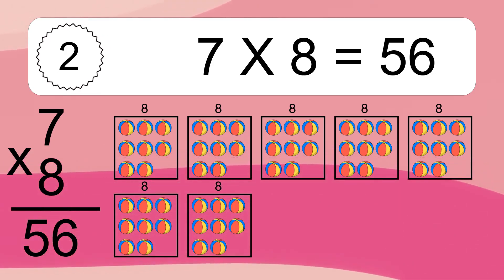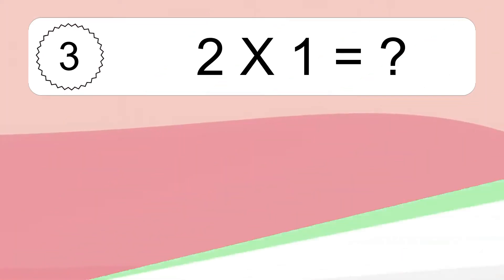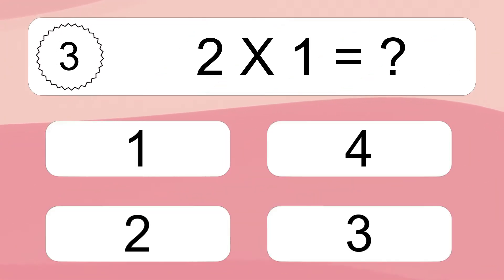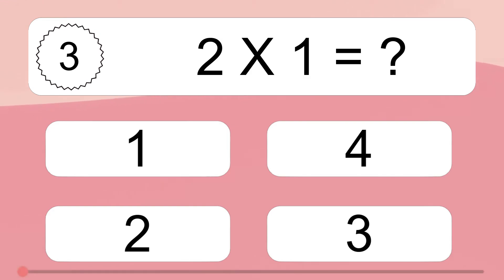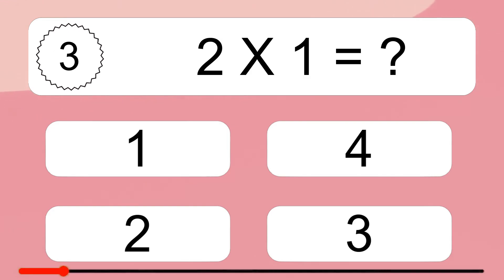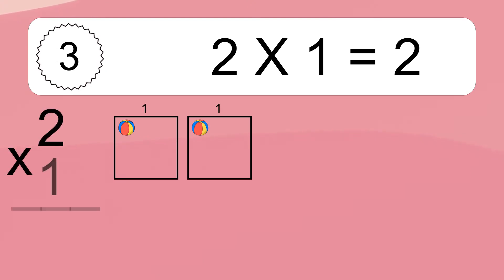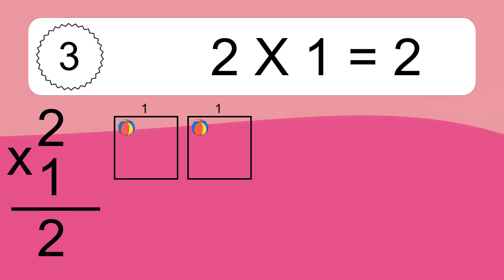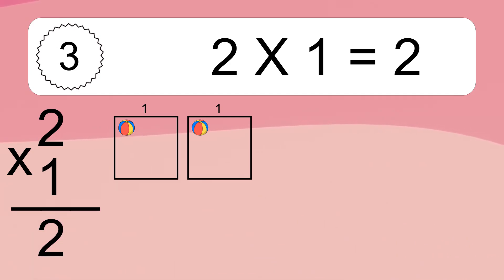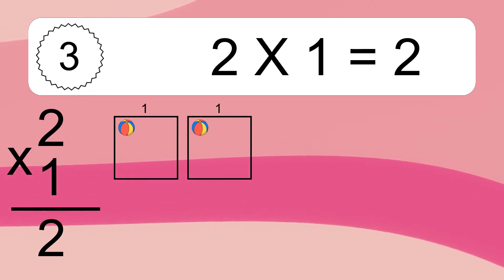This equals 56 balls. Two times one equals what? Two times one equals two. We have two boxes, and each box has one colorful ball inside. If you count all the balls in all boxes together, you will have two times one balls. This equals two balls.